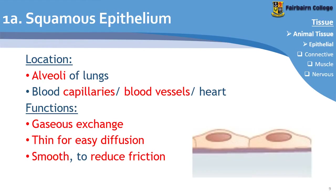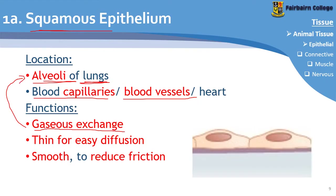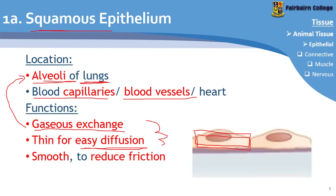The first type of epithelium is squamous epithelium. We find it in the alveoli of the lungs and in the vascular system — in blood capillaries and blood vessels. Based on its location, we can guess its functions. The first function is gaseous exchange, because it is found in the lungs. They are also thinner than other types of epithelium, allowing for easy diffusion into and out of the lungs and blood. They are also smooth to reduce friction.